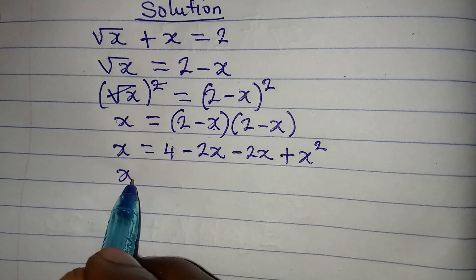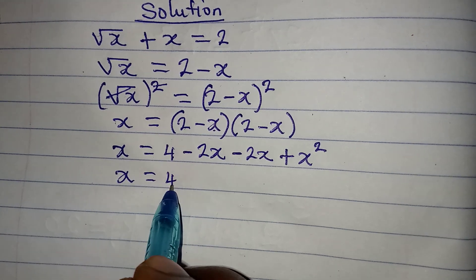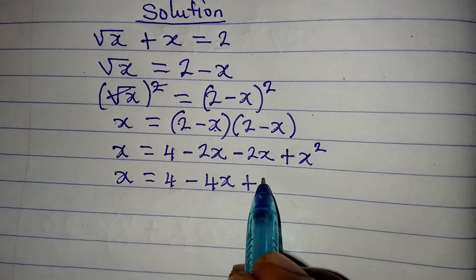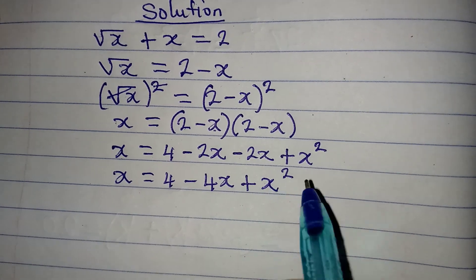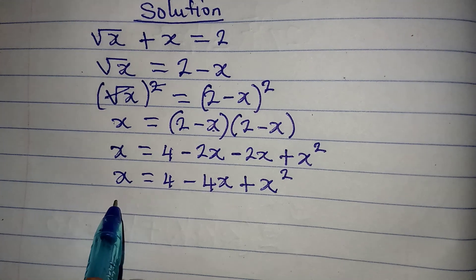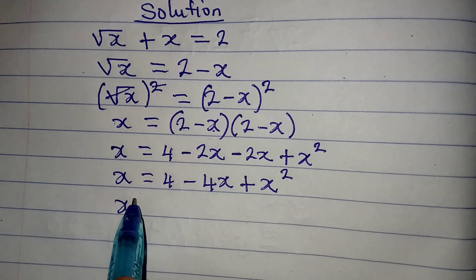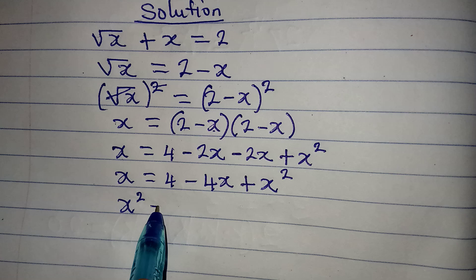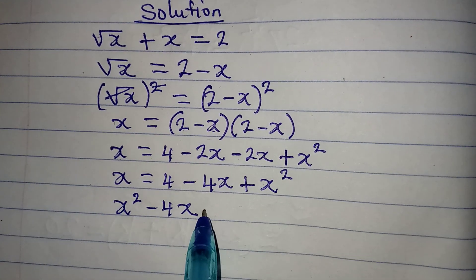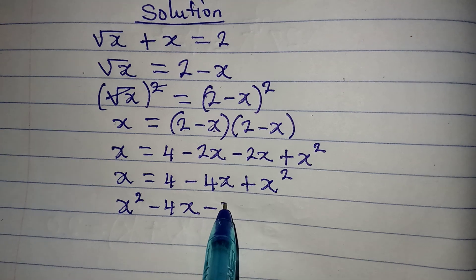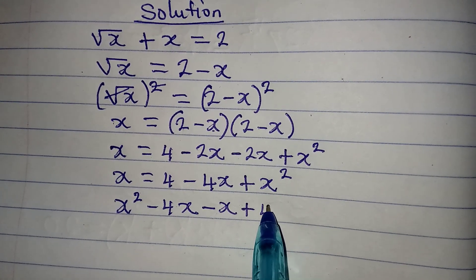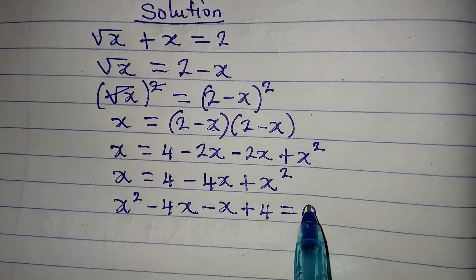So x equals 4 minus 4x plus x squared. Now rearranging: we get x squared minus 4x, then the x on the left moves over to give minus x, and plus 4, all equal to 0.